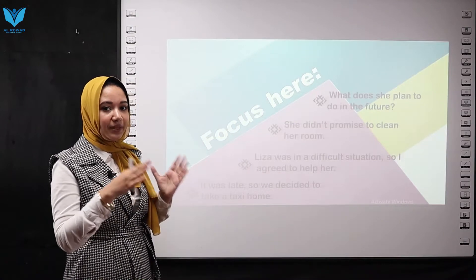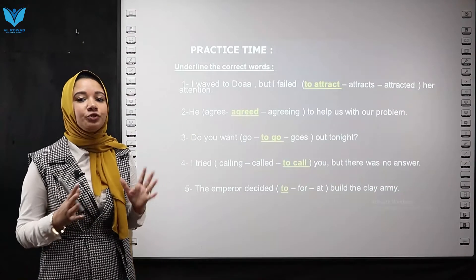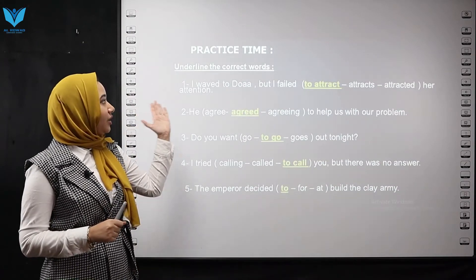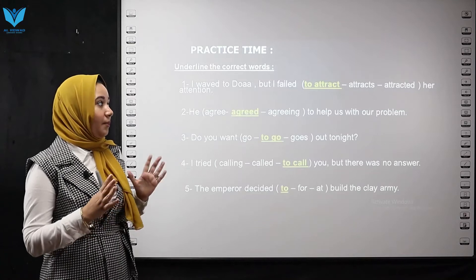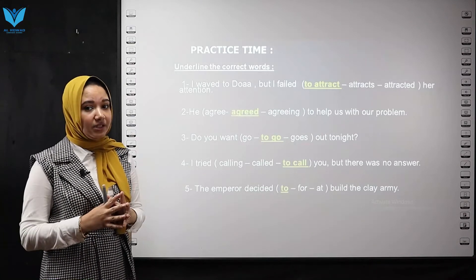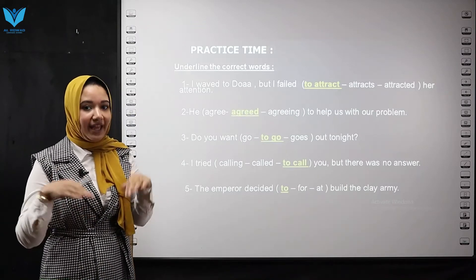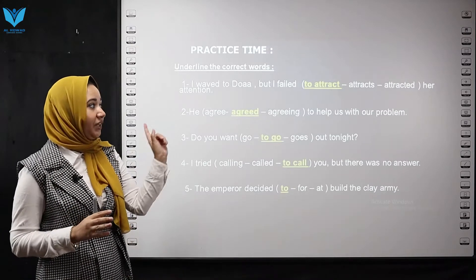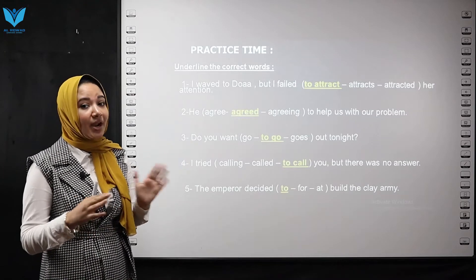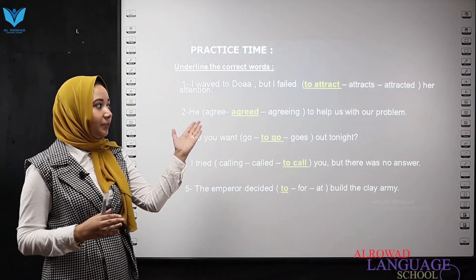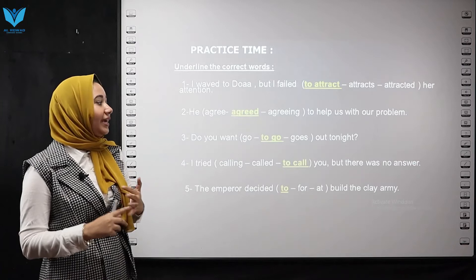Now let's move to the practice. Underline the correct words. Number one: I wanted to do it but I failed. After 'failed,' we use an infinitive — 'to' plus the base form. So I choose 'to attract.' The infinitive is 'to attract.'